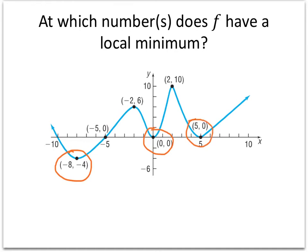So this function has three local minima, and they occur at x equals negative 8, x equals 0, and x equals 5. And that's our answer.